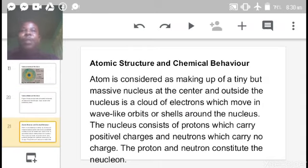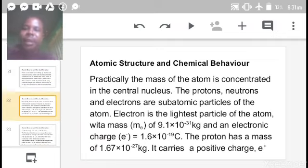We move to atomic structure and chemical behavior. Atom is made up of a tiny but massive nucleus at the center, and outside the nucleus is a cloud of electrons which move in wave-like orbits or shells around the nucleus. The modern atomic structure we are using is the electron cloud model. This nucleus consists of protons which carry positive charges and neutrons which carry no charge. The proton and neutron constitute the nucleus. Practically, the mass of the atom is concentrated in the central nucleus. The protons, neutrons, and electrons are subatomic particles of the atom.